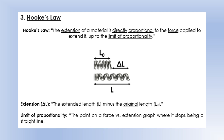The limit of proportionality is the point where we actually start changing the structure and breaking the bonds in the material. When stretching a spring, its original length is l-zero. We apply two outward forces to stretch it to a new extended length l. Hooke's Law states that the extension delta l is directly proportional to the force applied to stretch it.